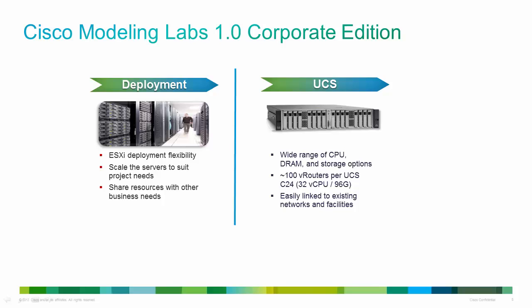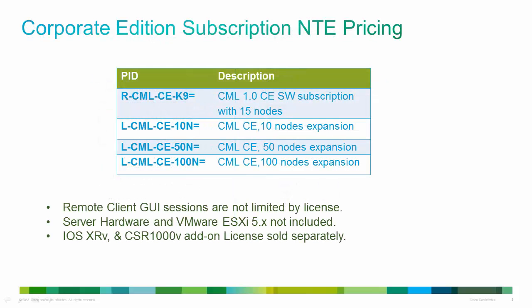The second part of the sizing decision is licensing, which is based on bundles you purchase. You can purchase in bundles of 10, 15, or 100 nodes, and the base product comes with a bundle of 15. So for example, to run 100 nodes you would purchase the base product (K9) and then add the 100-node bundle, giving you 115 nodes total. The node limit applies only to Cisco images — if you're running server images like Ubuntu or Red Hat, those do not count against licensing, so you can run as many as you want.